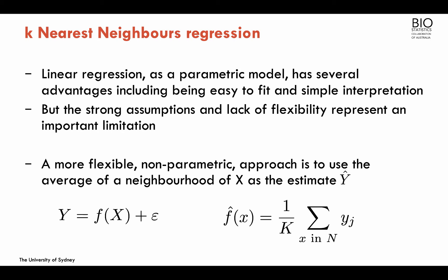We've seen before linear regression as a parametric model. This model has several advantages: it's quite simple to fit, simple to interpret, and very well studied. But there are strong assumptions with the model — in particular, the linearity assumption, which is a really strong assumption in terms of the association between the predictors and the outcome. We're going to look at k-nearest neighbors regression, which is a non-parametric approach.